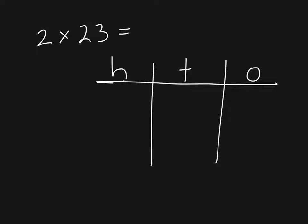For our first problem, we have 2 times 23. The first thing I'm going to do is rewrite this multiplication problem vertically — so 23 times 2 — because as we move into multiplication with larger numbers, this is how we will be writing them. I'm going to take my first factor, 23, and model that with place value disks in my place value chart.